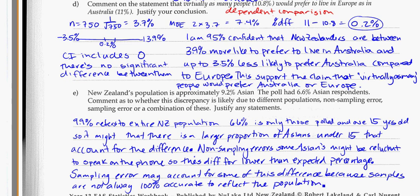By random luck, maybe a few less Asians were called than other ethnicities. So we've answered the three things they're hinting at and given a justification for each statement — not just that it's a different population, but that the numbers could actually differ between those over 15 and the whole entire population. I think that'll cover that one.